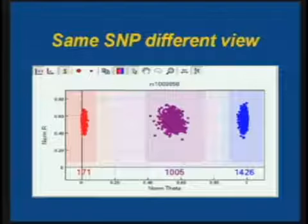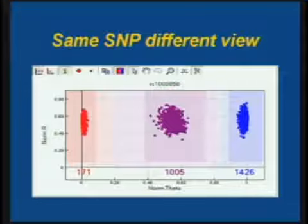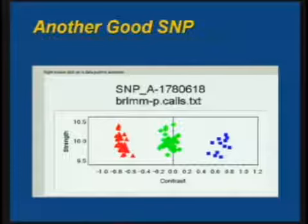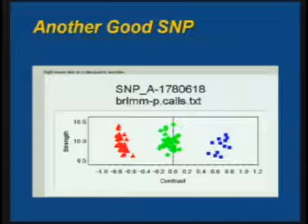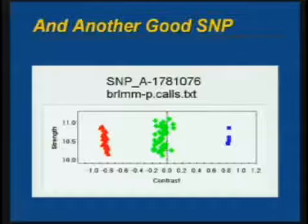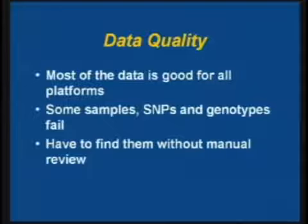The shaded areas are where Illumina would call the data. The non-shaded areas — if there were genotypes out there, they wouldn't be called. This is another nice SNP — this is Affymetrix 5.0 data, and actually data that we ran in our lab plus data run at Affymetrix. So at least in this case, running across two labs didn't make a difference. And another good SNP. Most of the SNPs look like these, but some don't.